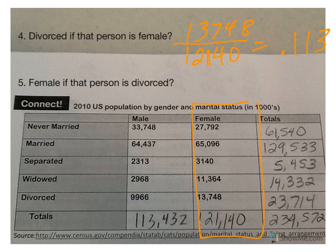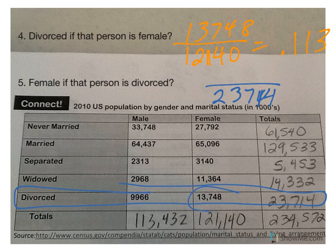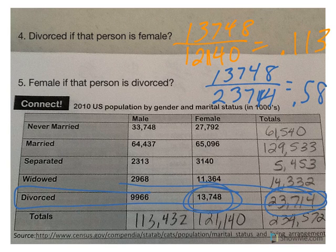Now when you look at number five: what is the probability a randomly selected U.S. citizen is female if that person is divorced? Now we're talking about people who are divorced, so we're looking at the divorced line. My denominator is 23,714. We want to know the probability that they're female, so the top is 13,748, and we get .58. So 58% of the divorced people in the U.S. are female. Notice — same words, totally different meaning and answer.